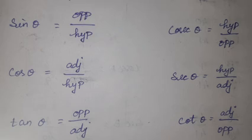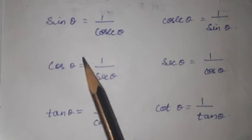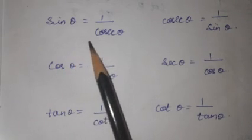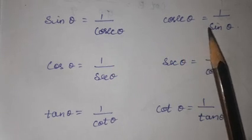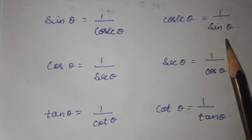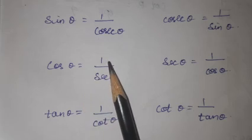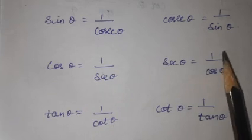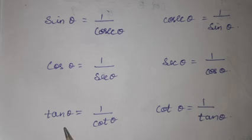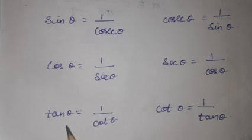The reciprocal relationships I already told. Sin theta is equal to 1 divided by cosecant theta. Cosecant theta is equal to 1 divided by sin theta. Cos theta is equal to 1 divided by secant theta. Secant theta is equal to 1 divided by cos theta. Tan theta is equal to 1 divided by cot theta. Cot theta is equal to 1 divided by tan theta.